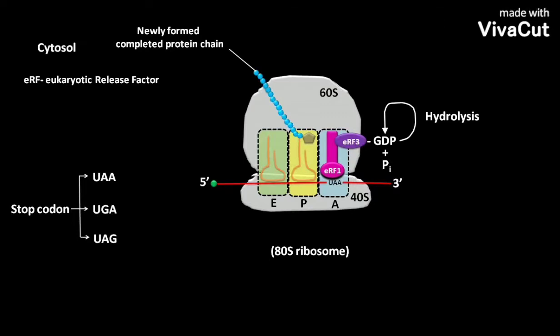The hydrolysis step acts as a proofreading step because it ensures that the previous step, the recognition of a stop codon by eRF1, has occurred correctly and then only allows subsequent steps to proceed.